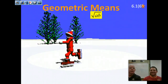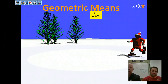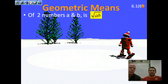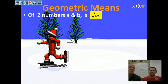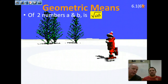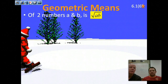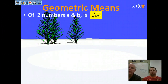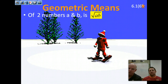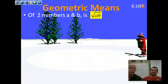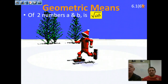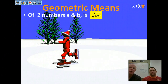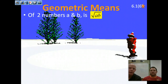Geometric mean is an interesting concept. We're finding the geometric mean between two numbers, a and b. You should know the arithmetic mean, which is the same as finding the average — add two numbers and divide by 2. The geometric mean steps those operations up one level: instead of adding, we multiply; instead of dividing by 2, we take the square root. So the geometric mean of a and b is the square root of a times b.